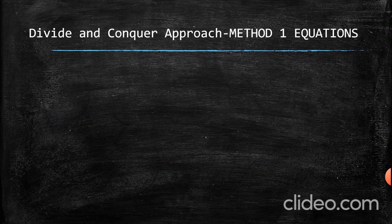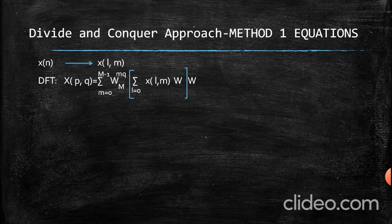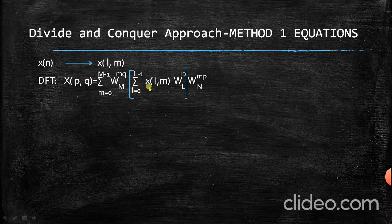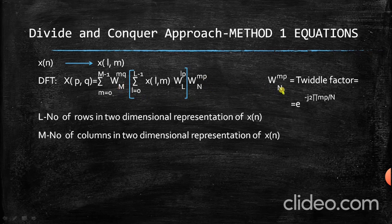Before getting into an example, let us look at the equations used for finding the DFT using the divide and conquer approach. The small x is the given input signal in the form of a one-dimensional array, which we represent as a two-dimensional array — a matrix. The DFT equation gives capital X, the desired transformation signal, in two-dimensional array form. The terms W_MMQ, W_LLP, and W_NMP are the twiddle factors. The value of W_NMP is e to the power of minus j 2π MP divided by capital N. Capital L represents the number of rows and capital M represents the number of columns in the two-dimensional representation.